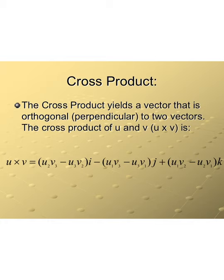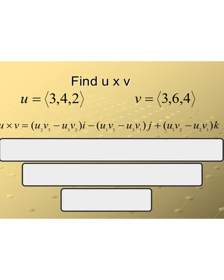Let's go ahead and look at an example. We have two familiar vectors: vector u is (3, 4, 2) and vector v is (3, 6, 4). We're going to use them with the cross product formula.